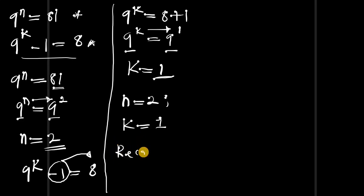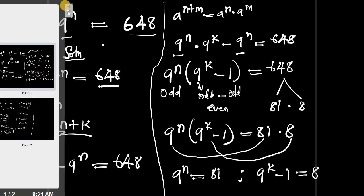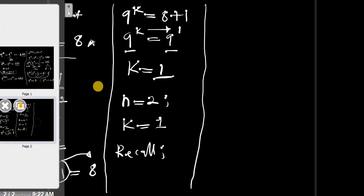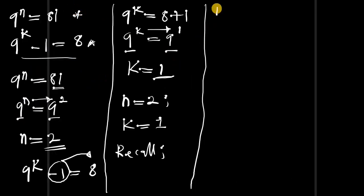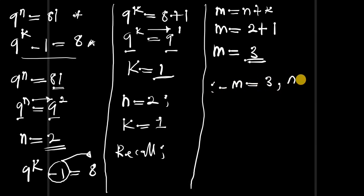Now recall that from the very beginning we set m equals n plus k. So substituting our values, m equals 2 plus 1, which gives m equals 3. Therefore m equals 3 and n equals 2.